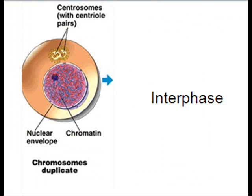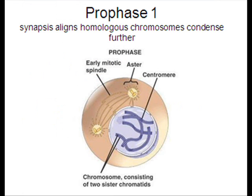Meiosis is the process by which sex cells called gametes are produced. Like mitosis, but division occurs twice to make four daughter cells. The daughter cells are haploid — they have half the DNA of the parent cell.